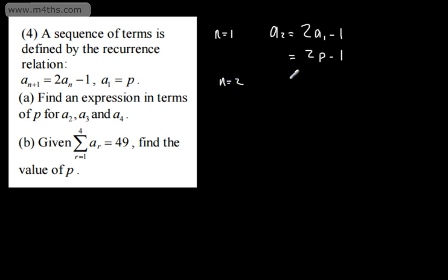When n is equal to 2, we're going to have now a3, that's going to be 2 lots of a2 minus 1. So that's going to be 2 lots of 2p minus 1. And then we're going to subtract 1, which is going to give us 4p minus 3.